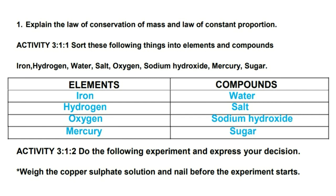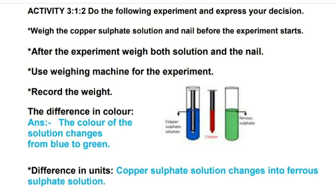Next activity: do the following experiment and express your decision. Weigh the copper sulfate solution and iron nail before the experiment starts. After the experiment, weigh both solution and the nail. Use weighing machine for the experiment and record the weight.